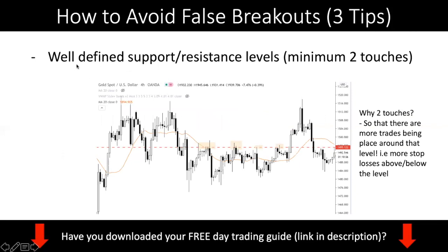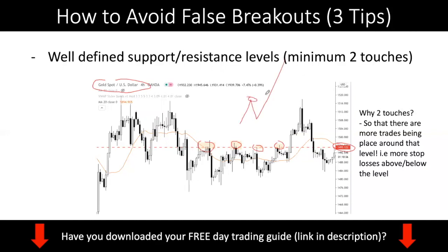The first feature is your well-defined support and resistance level. I have a chart here — this is gold on H4 — and you can see that the level at 1495 is a very strong, well-defined level. There is one touch here, two touches, three touches, and four touches. So it meets the requirement of having a minimum of two touches. You might ask why I insist on two touches — why can't I just do one touch and buy?